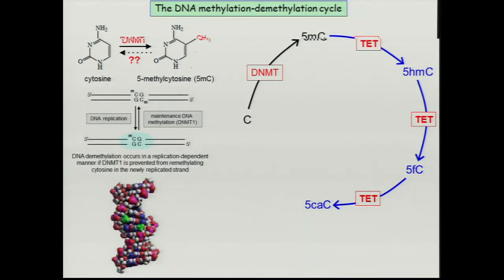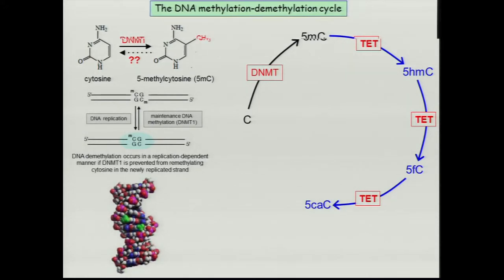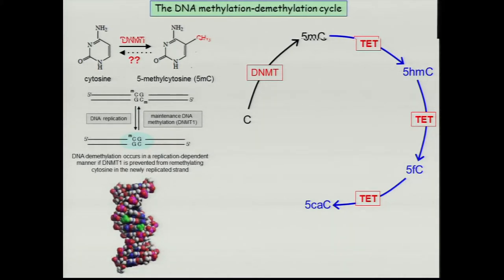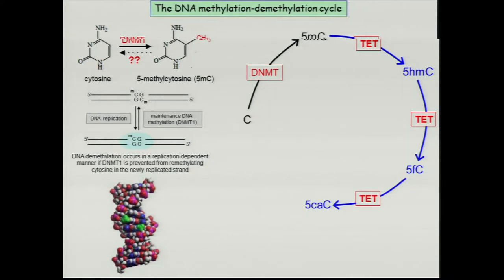The methylated CpGs are in the major groove, available for binding by various kinds of methyl-binding proteins. The standard way for DNA methylation to be erased is DNA replication, which replaces the methylated cytosine on the replicated strand with plain cytosine, then DNMT1 puts it back via the DNMT1-UHRF1 complex. If you prevent DNMT1 from putting the methyl group back, what you get is a slow, progressive, replication-dependent loss of DNA methylation.